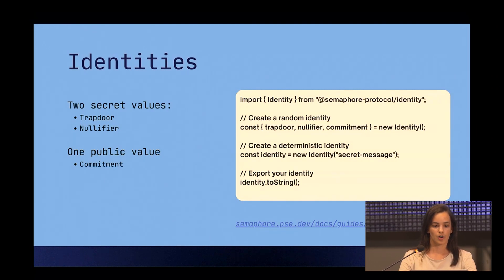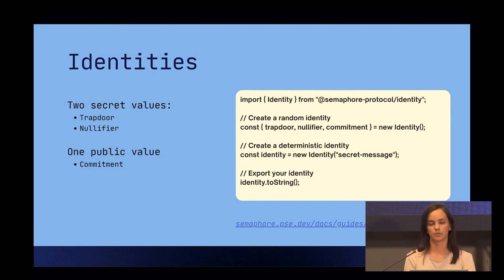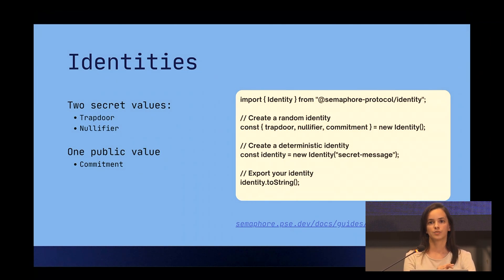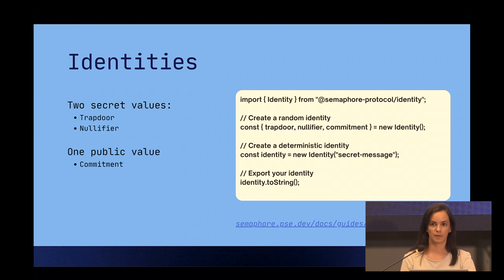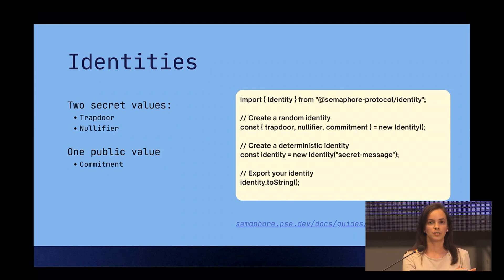Let's start with identities. Identities are the first part to interact with the protocol. They are made up of two secret values and one public value. The secret values are the trapdoor and the nullifier, and the public value is the commitment.